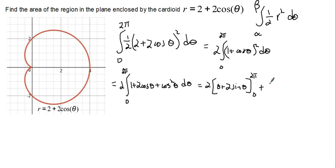plus 2 times the integral from 0 to 2 pi of cosine squared theta, and cosine squared theta can be integrated by using the power reducing formula. Cosine squared theta is equal to 1 half of 1 plus cosine 2 theta d theta.